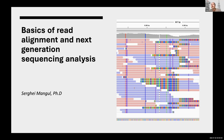We'll talk about the very basic step of next generation sequencing analysis: read alignment. We would like to use the reference — we discussed the reference a couple of times — a very nicely assembled human genome of particular individuals. We know very well and precisely the genome of that person.